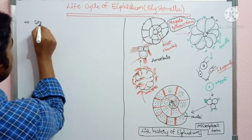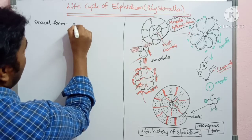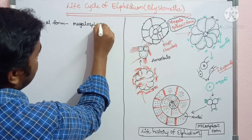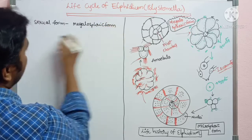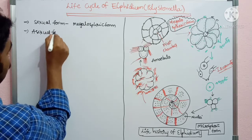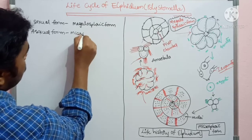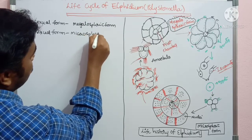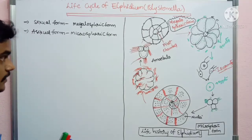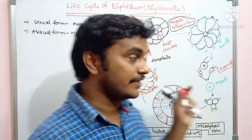One is the sexual form, that is the macrospheric form. The second one is the asexual form, that is the microspheric form. So two forms — macrospheric form and microspheric form — are present in Elphidium.